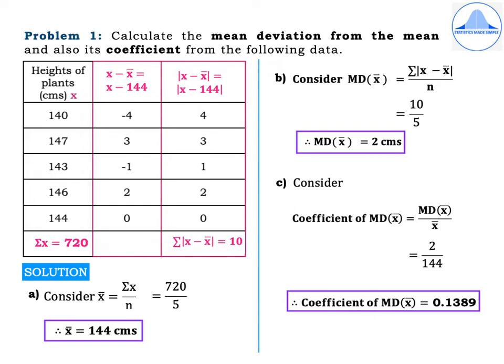Starting with the first problem: calculate the mean deviation from the mean and also its coefficient from the following data — heights of plants in centimetres: 140, 147, 143, 146, and 144. All calculations in the table are highlighted in pink colour. The first step is to mark heights of plants in centimetres as small x, then calculate summation x which is equal to 720. The data given is only in terms of x, so it is raw data.